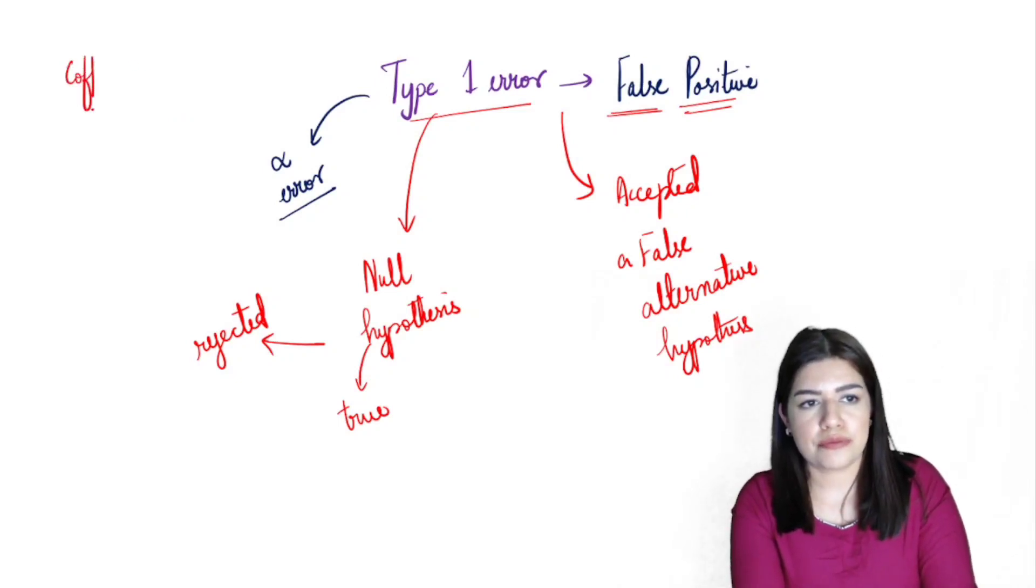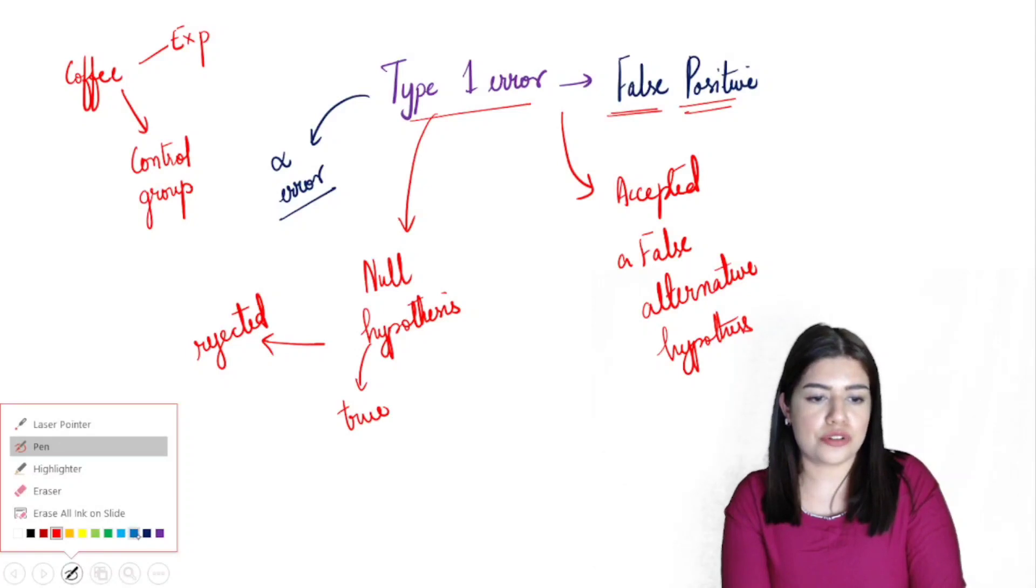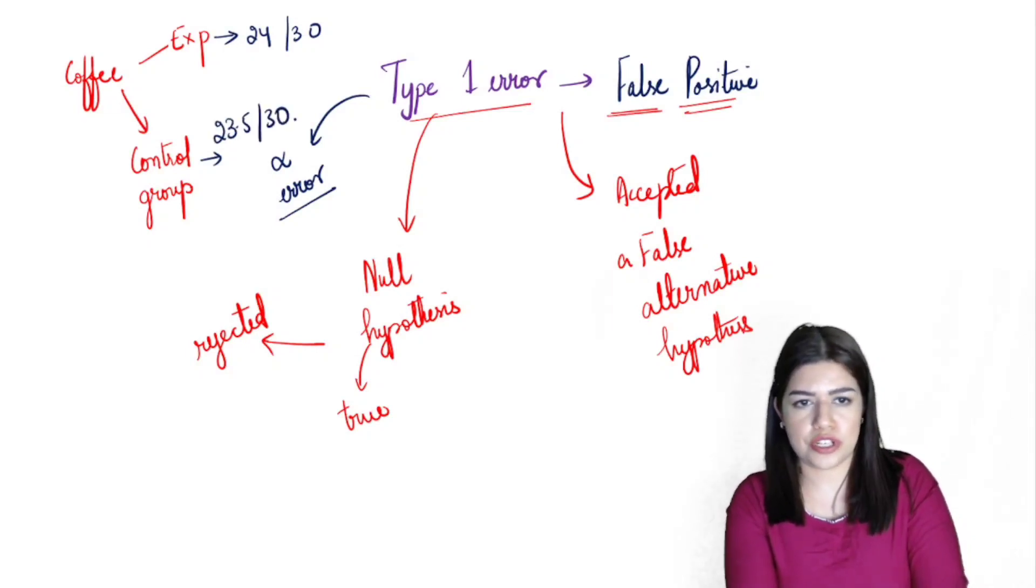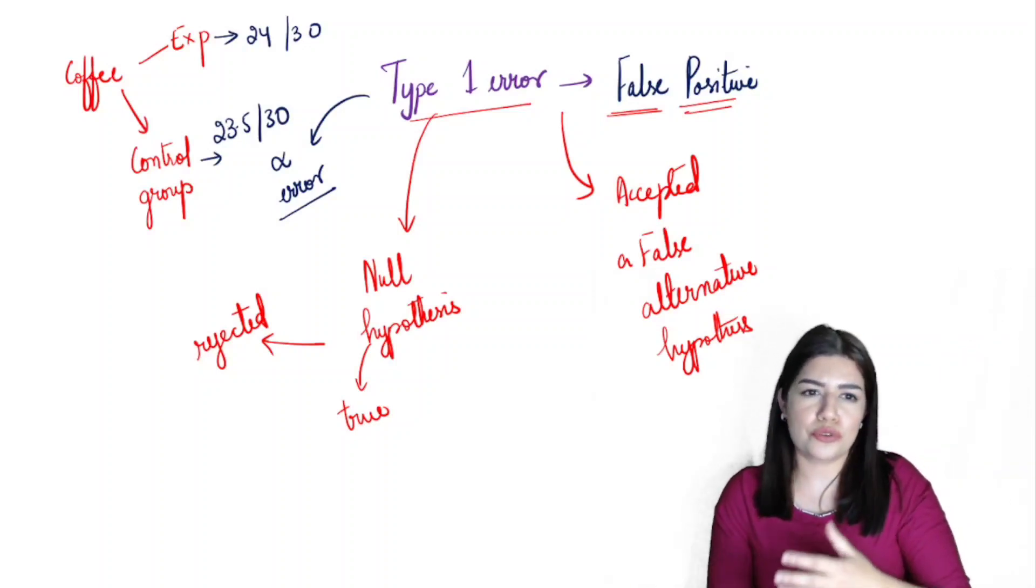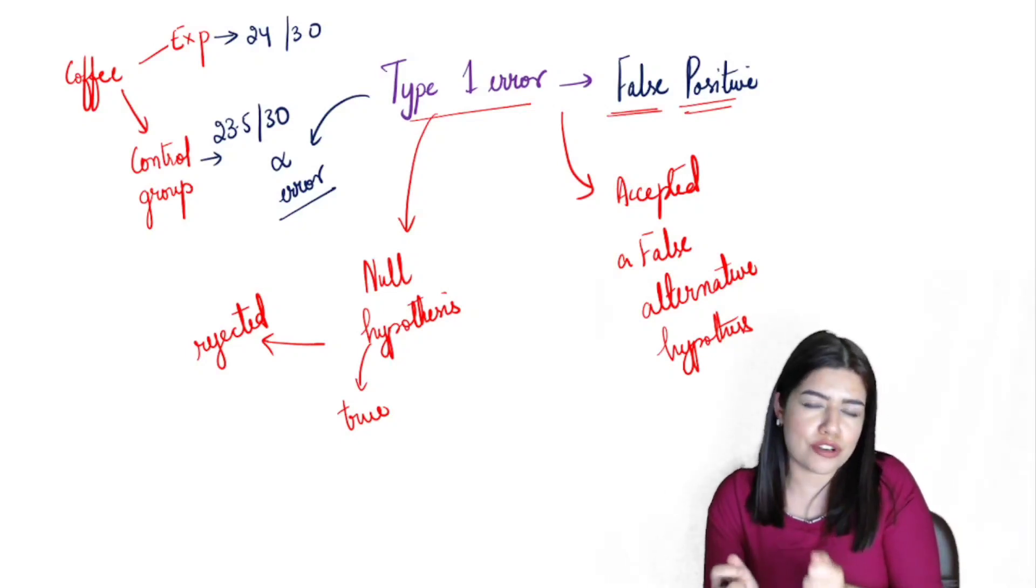To test whether it has an effect, coffee was given to a group which is our experimental group and was not given to another group which is our control. Turns out that the concentration levels, hypothetically, of the experimental group came out to be 24 out of 30, and of the control group came out to be 23.5 out of 30.